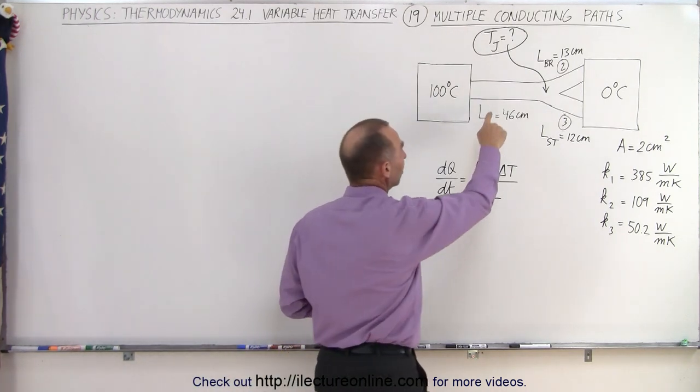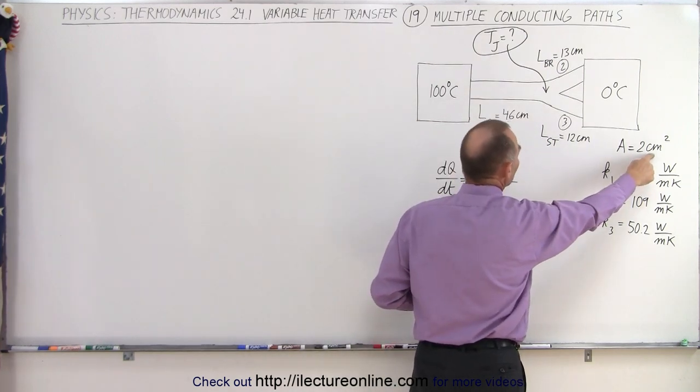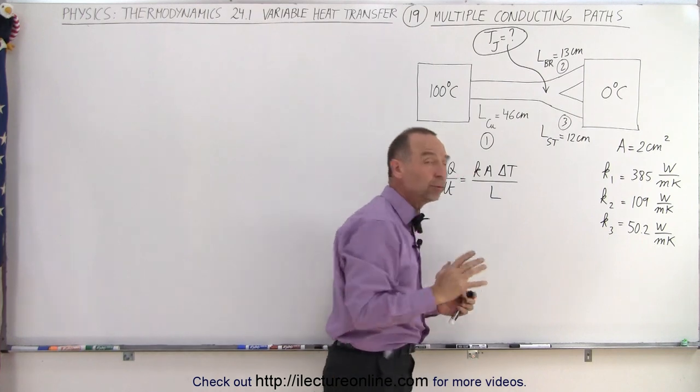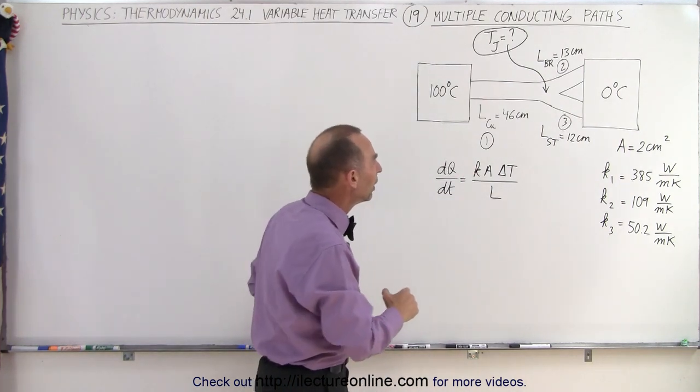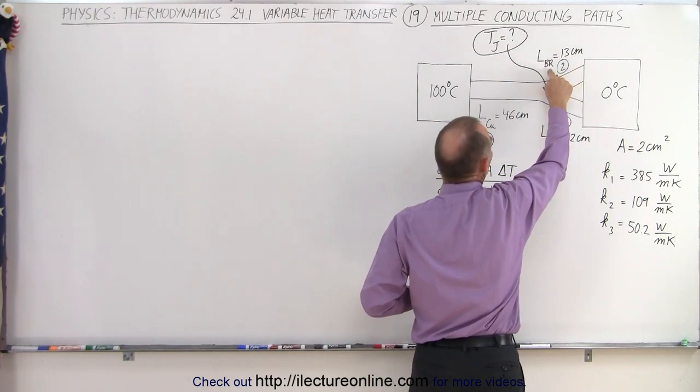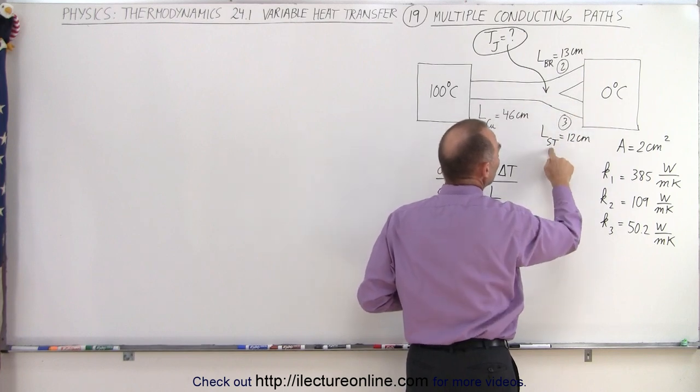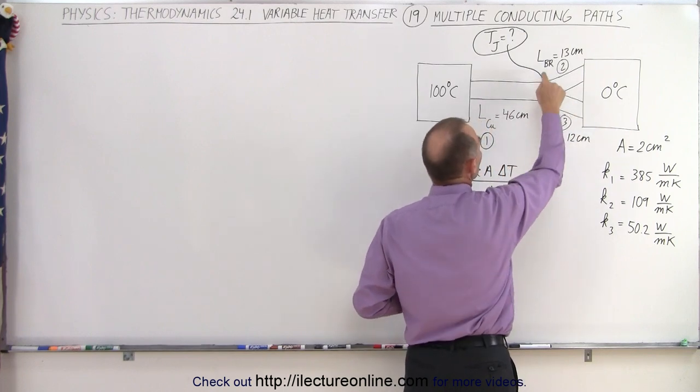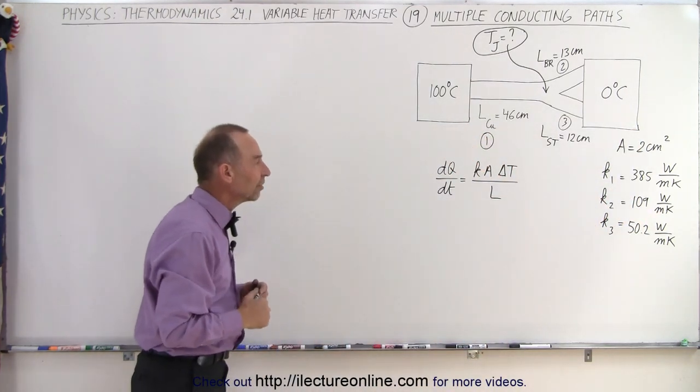The first conducting path is made of copper with a cross-sectional area of 2 square centimeters. All three paths have the same cross-sectional area, which makes it easier. The second conducting path has a length of 13 centimeters and is made of brass, and the third is 12 centimeters long made of steel. So we have copper, brass, and steel with three different conductivity constants.